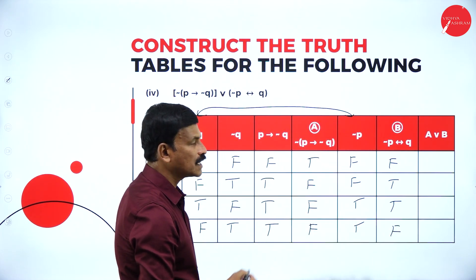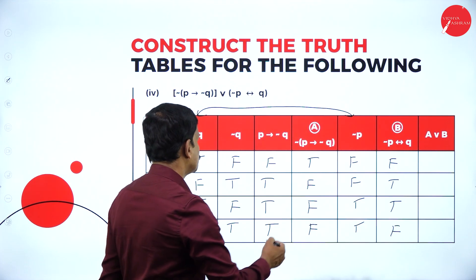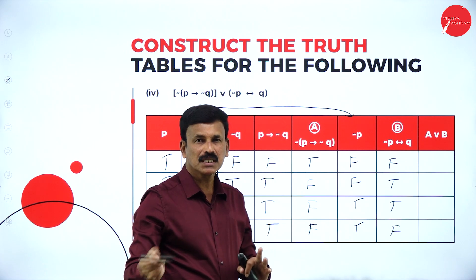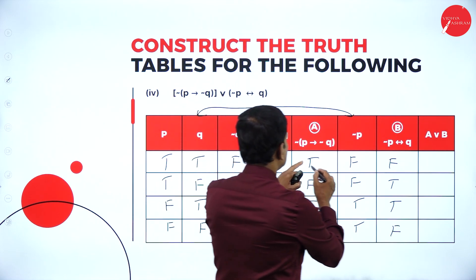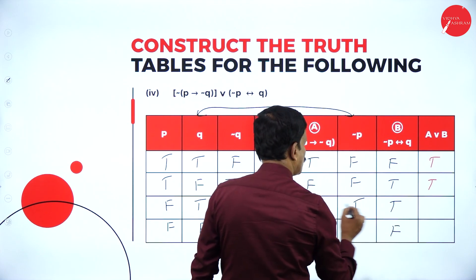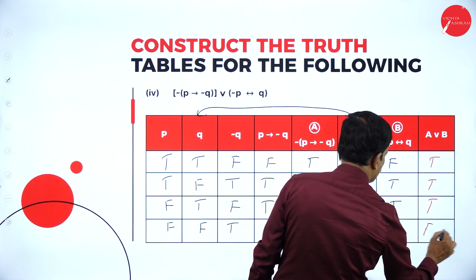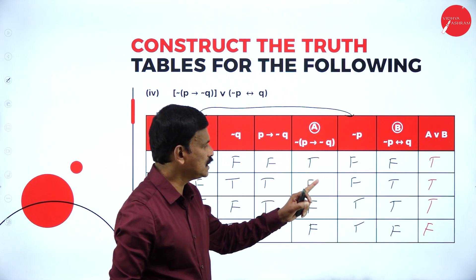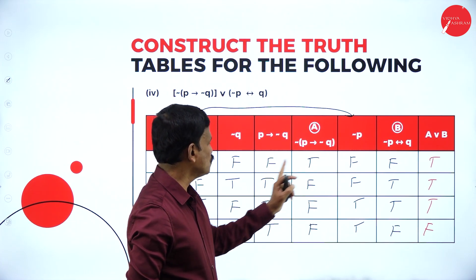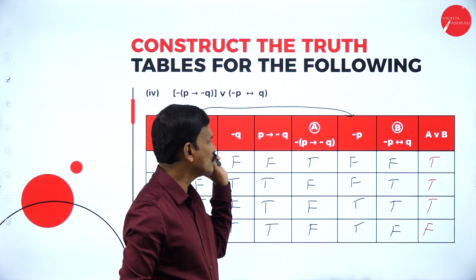A and B are connected by disjunction — false and false is false; in other cases it is true. So: true and false is true, false and true is true, false and true is true, false and false is false. Result: T, T, T, F. This is the truth table for this given proposition.